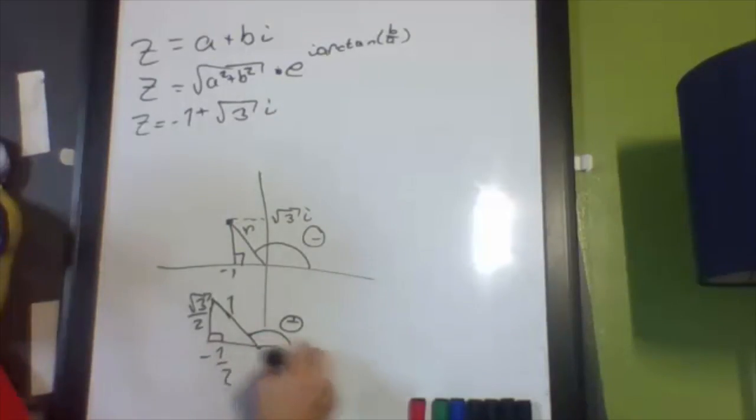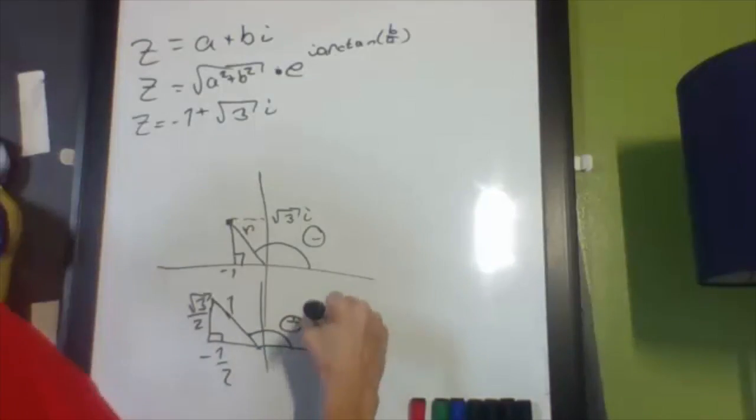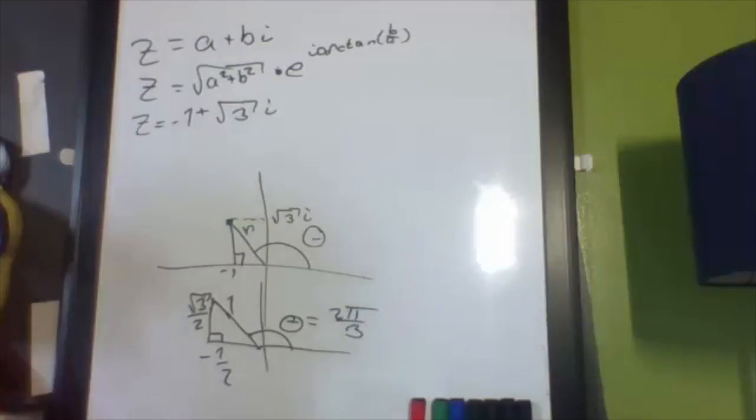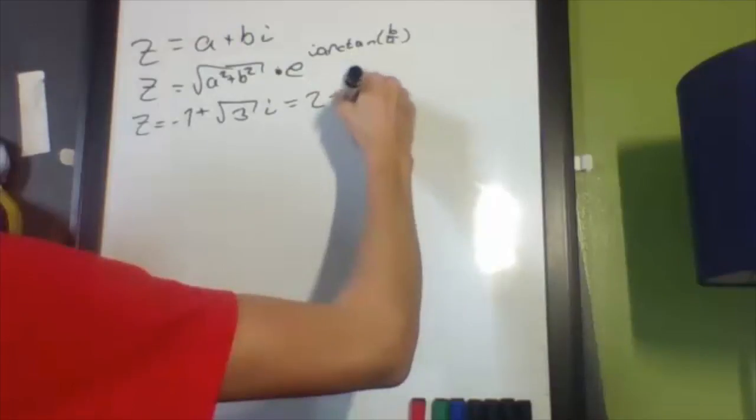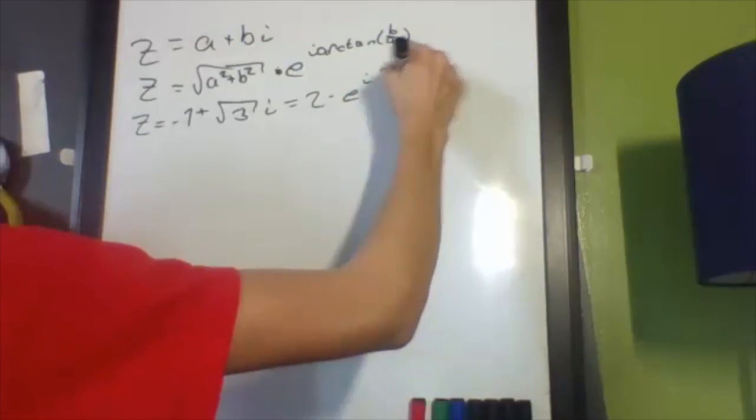We know that the angle from the x-axis, that angle is going to be two pi over three. And we also know that the distance, because we're multiplying everything by two, is going to be two. And there we have it. So we have it that this is going to be equal to two times e to the i, two pi over three.